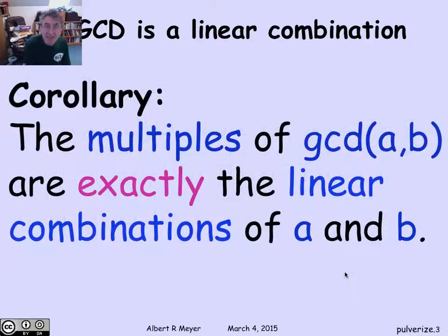A corollary of this fact is that if we want to characterize the linear combinations of A and B, they're precisely the multiples of the GCD of A and B. That's because every factor of both A and B divides any linear combination of A and B. Once we know the GCD of A and B is itself a linear combination, you've got all the linear combinations by taking multiples of the GCD.